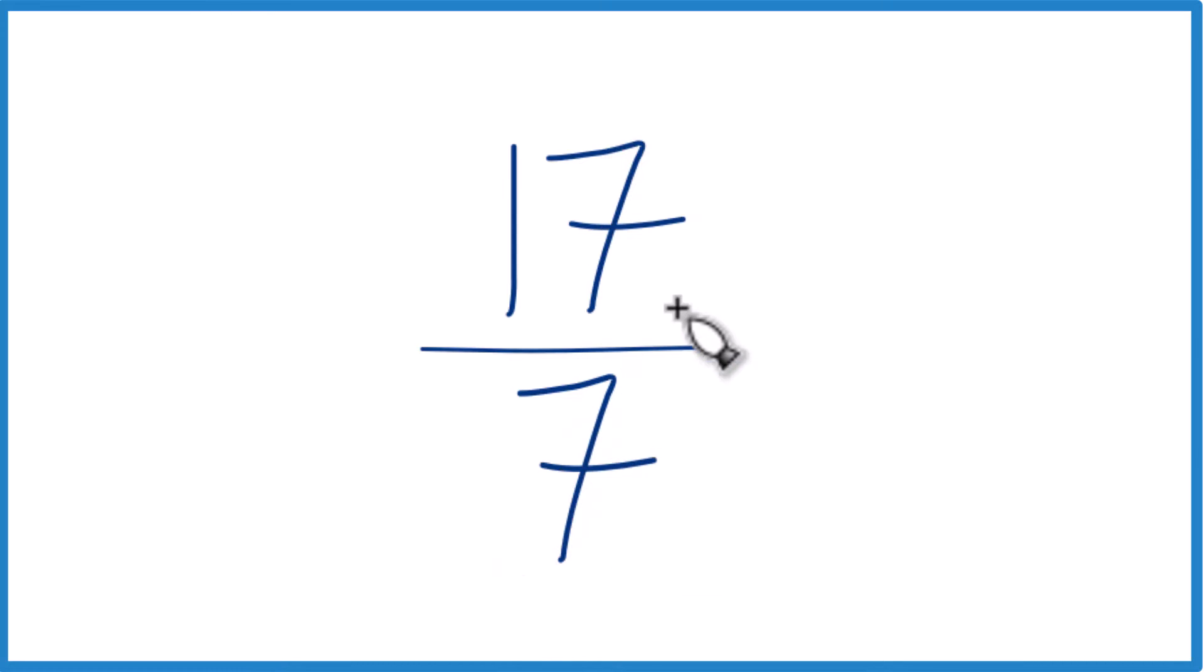Note that we can't simplify this any further because the only factor that's in common between 17 and 7 is 1. So it's already simplified, we just want to get it to a mixed number.